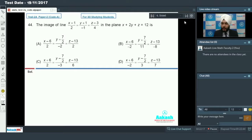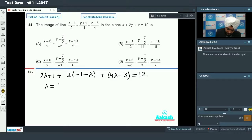Simple question. Let us move on to 44. I need to find the image of the line x minus 1 by 2 equals y plus 1 by minus 1 equals z minus 3 by 4 in the plane x plus 2y plus z equals 12. To find image of a line, we solve plane and line to get intersection point, then find mirror image of any point. First solve this line with this plane: 2 lambda plus 1 plus 2 into minus 1 minus lambda plus 4 lambda plus 3 equals 12. This gives lambda equals 5 by 2.